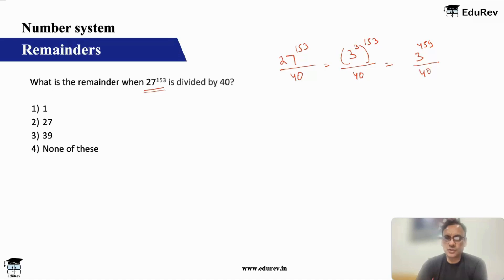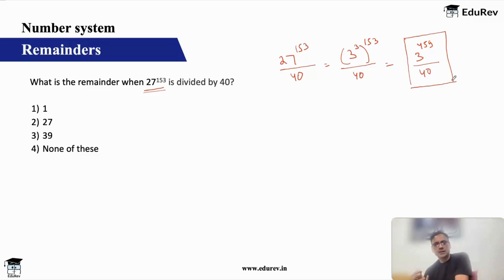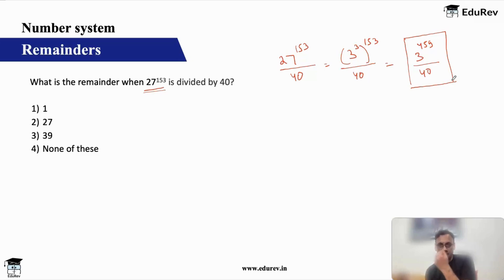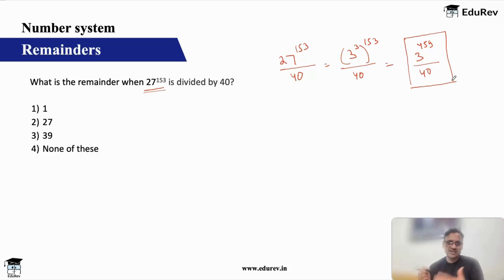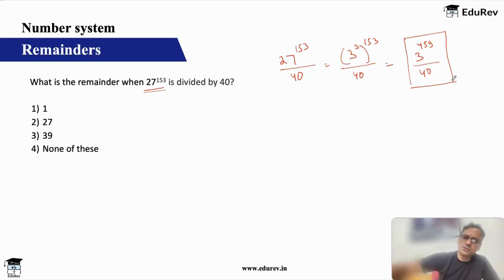This is the first thing you should always do because it gives you more options. Now, no power of 3 comes close to 40 plus or minus 1. 3 to the power 3 is 27 and 3 to the power 4 is 81 — it does not come anywhere close to 40. And I want that plus or minus 1 range only.